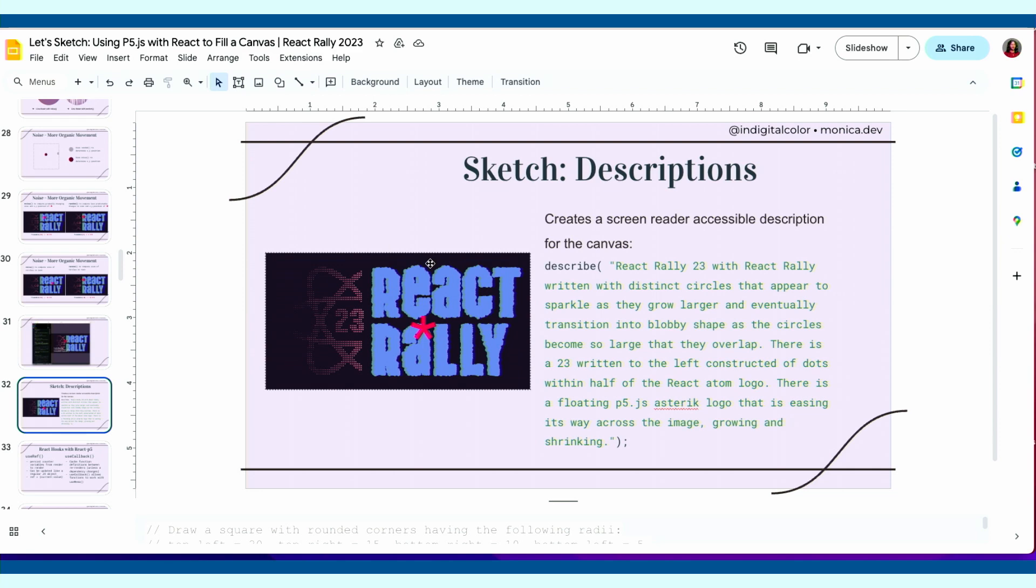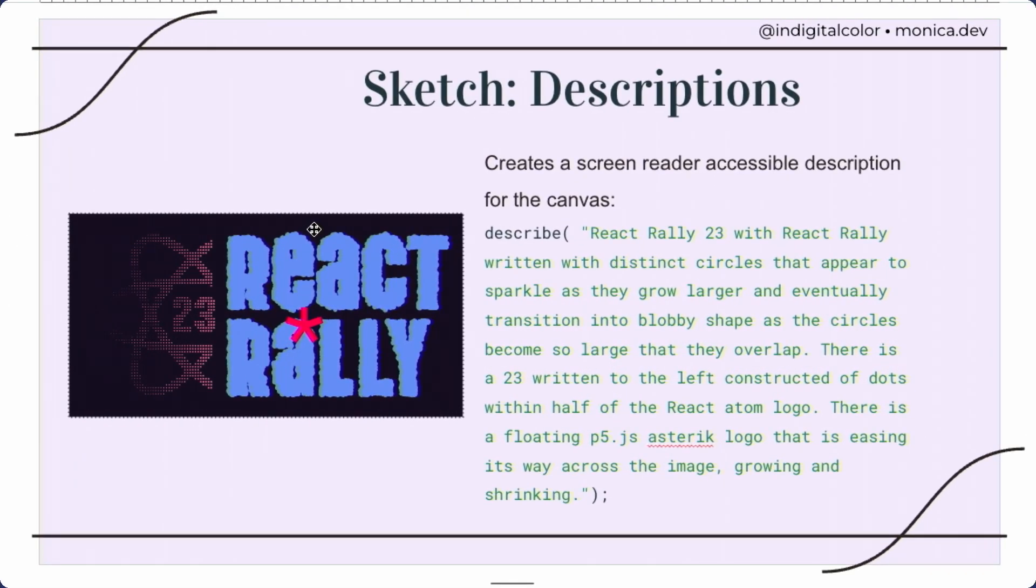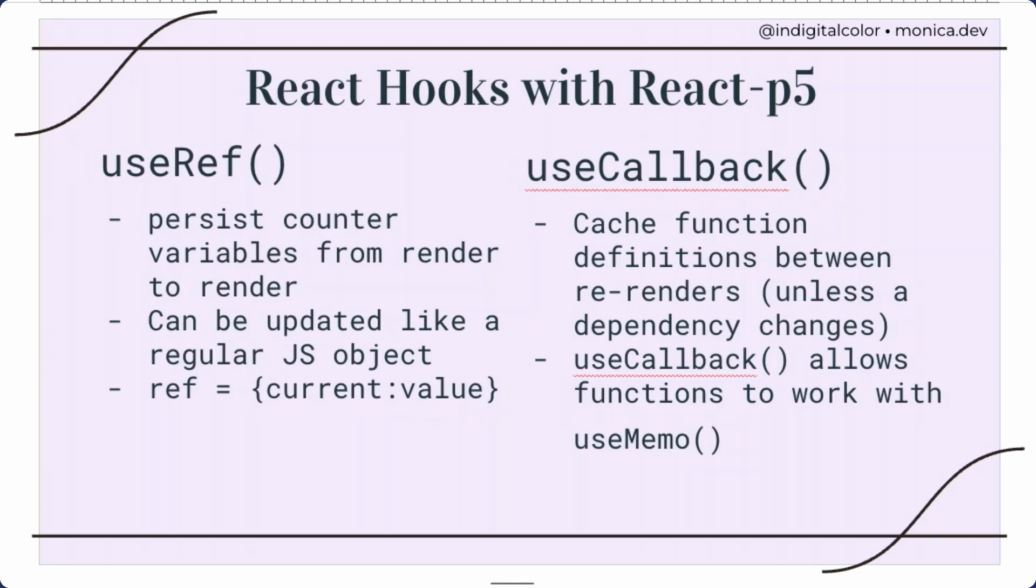And then also with p5.js, we can use describe to create a description of the canvas. So if someone is using a screen reader so that our graphic is more accessible, and that can go inside the draw loop or that can go inside other functions or methods within p5. And they have some other tools to make sketches more accessible that I recommend reading up on and being familiar with.